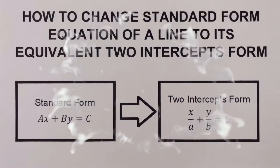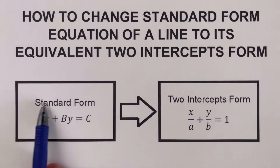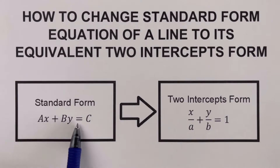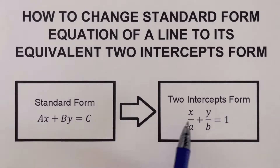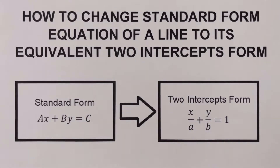Hello everyone. This video will show how to change the standard form equation of a line to its equivalent two-intercepts form. We are given the standard form ax + by = c and we are supposed to change it to the two-intercepts form x/a + y/b = 1.